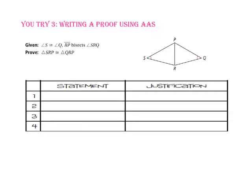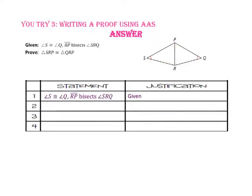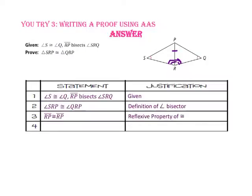Pause the video and do you-try number three. We want to prove triangle-SRP is congruent to triangle-QRP. Given: angle-S is congruent to angle-Q, and side-RP bisects angle-SRQ. By the definition of bisect, angle-SRP is congruent to angle-QRP. By the reflexive property, side-RP is congruent to side-RP. Since we have two angles and a non-included side congruent to two angles and a non-included side, triangle-SRP is congruent to triangle-QRP by the angle-angle-side theorem.